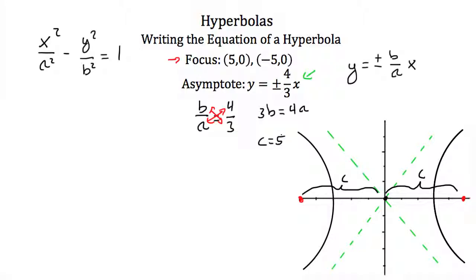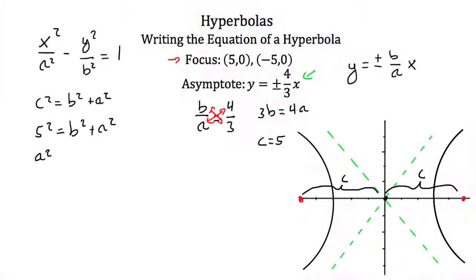We always find c using the equation c squared equals a squared plus b squared. Plugging in c equals 5, we get 5 squared equals a squared plus b squared, so a squared plus b squared equals 25.